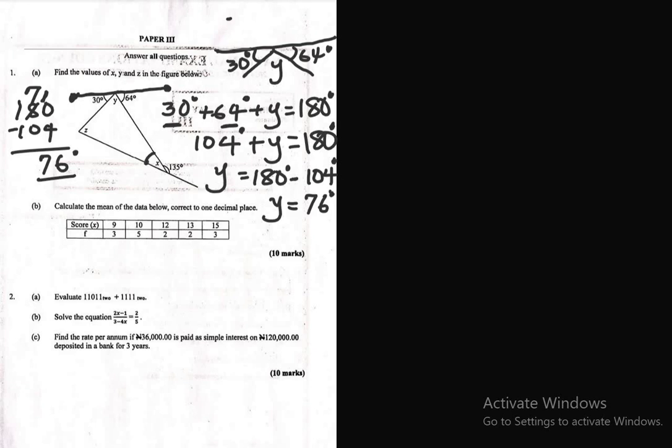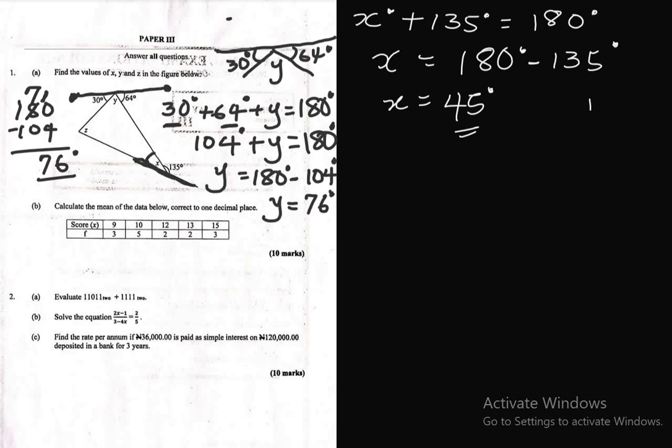Next we need to solve for x which is this angle. Again, angle on a straight line is 180, so this is a straight line. It simply means that angle x degrees plus 135 will form angle on a straight line, so both of them must be equal to 180 degrees. To get the value of x, you collect like terms. 180 is at the right hand side. You move plus 135 degrees to the right hand side to meet 180, so that will give you minus 135 degrees. So the value of x would be 180 minus 135, which is 45 degrees.